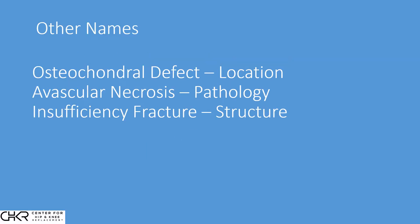An osteochondral defect is a disruption of the knee bone at the surface, and the confusing part is that all three names point to the same problem. An osteochondral defect refers to the location — the pathology occurs at the junction of the bone and the cartilage surface, and there's a defect, so it's called OCD. This is very different from osteochondritis dissecans, which happens in children and adolescents. This is an osteochondral defect in older or more mature patients.